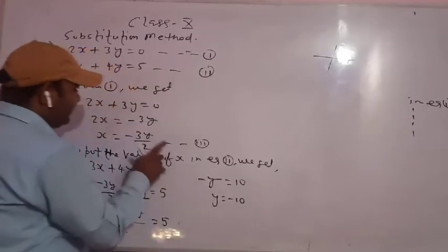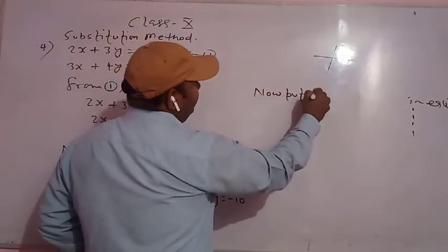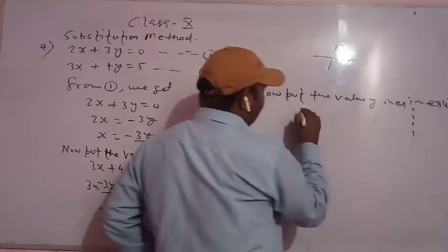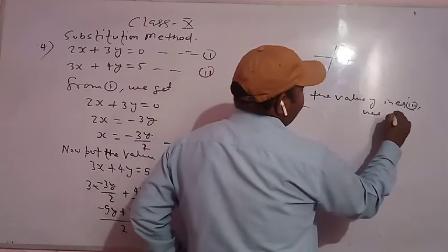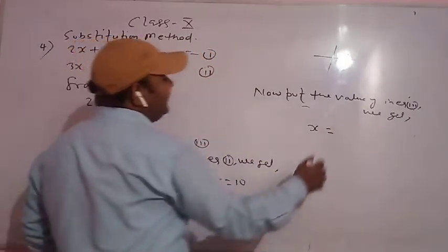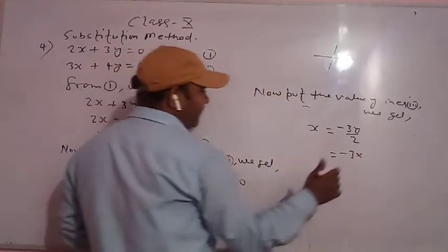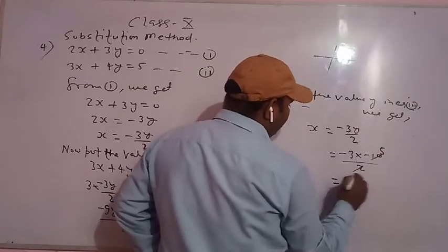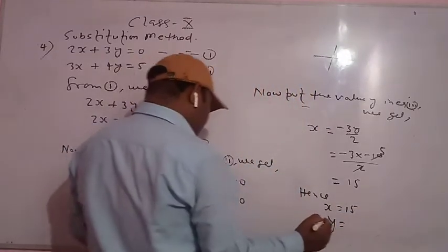Now we will put the value of y in the third equation to get the value of x. The third equation is x equals minus 3y by 2. The value of y is minus 10, so x equals minus 3 times minus 10 by 2, which is 30 by 2 equals 15. So x is equal to 15 and y is equal to minus 10.